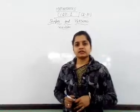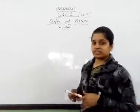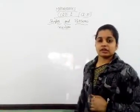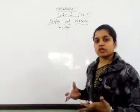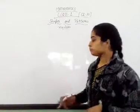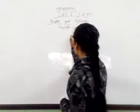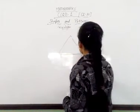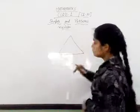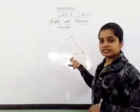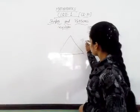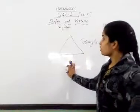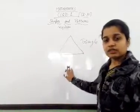Let's start the revision on plane shapes and solids. We have some shapes and solids and we need to identify them. The first shape has three sides, so it is a triangle. It's a plane shape — triangle with three sides.